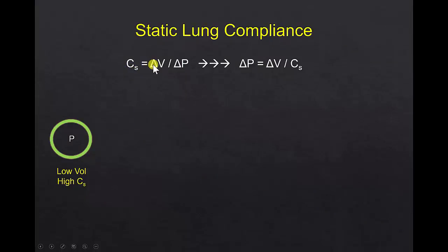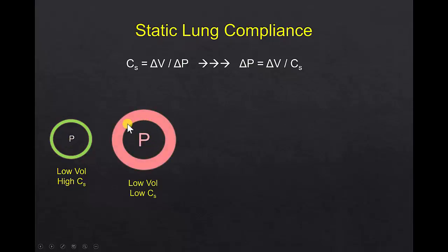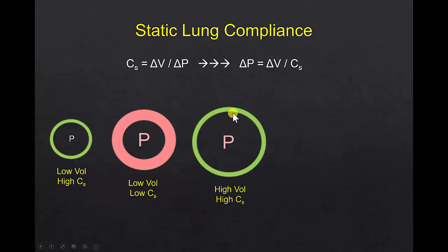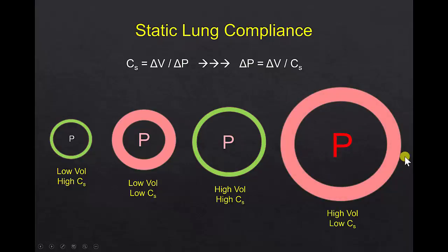Lung compliance is defined as how much volume we get for a given pressure change. The pressure required is related to volume divided by compliance, meaning larger volumes or lower-compliance lungs require higher pressure. A normal-sized lung with normal compliance requires only low pressure. A normal-sized lung with stiff lungs — low compliance — requires higher pressure. A normal compliant lung requiring a larger volume also needs higher pressure. If we try to inflate a stiff lung to a large volume, we need the most pressure.